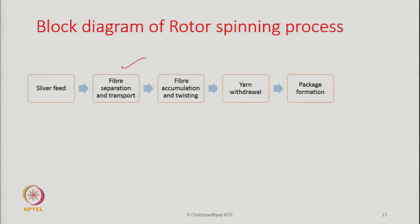Next is fiber separation and fiber transport — as I said, we have to stretch this sliver, and for that we have to introduce a break. Then comes fiber accumulation and twisting. After that we will have yarn withdrawal — twisting means the yarn is forming at this point, now we have to take out the yarn. So yarn withdrawal has to be there, and then we will have package formation. So these are the various units of the rotor spinning: sliver feed, fiber separation unit and fiber transport, fiber accumulation and twisting by a twisting element, then yarn withdrawal, and then package formation.